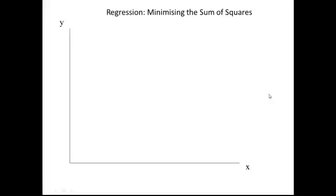In this video we're going to look at how we minimize the sum of squares. That's the basic principle of simple regression, and here we have a dependent variable y and an independent variable x. We also have a set of five points that are defined in terms of their y values and their x values.